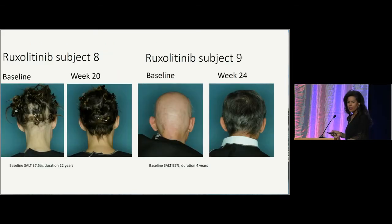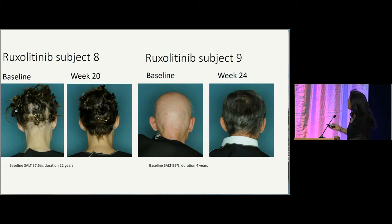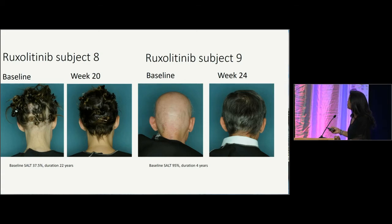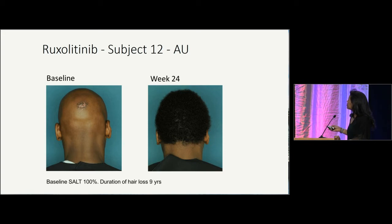Showing a subset of the patients who responded to treatment: the first patient had fairly mild patch-type hair loss, but at week 20 she has full regrowth. Patient nine had essentially totalis with a 95% SALT score at baseline, with excellent regrowth at week 24. Another patient had alopecia universalis for nine years prior to treatment, with excellent regrowth at week 24.